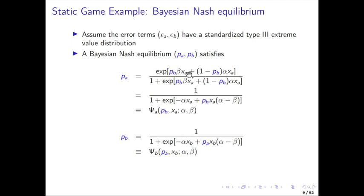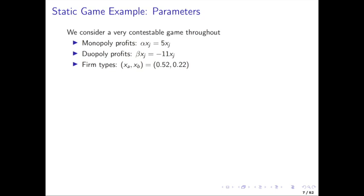Everywhere you have the indicator for the opponent's action, you replace it by the choice probability because you integrate out those unobservables. With probability P_B — the opponent's investment probability — firm A gets the duopoly profits beta, and with probability one minus P_B, firm A gets the monopoly profits alpha times X_A. So this is very intuitive. The equilibrium is where those two investment probabilities are mutually best responses to each other — where the two best response functions cross each other.